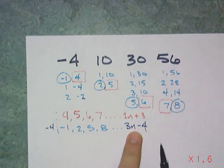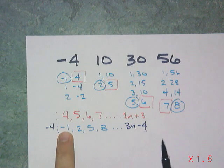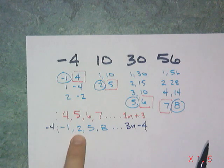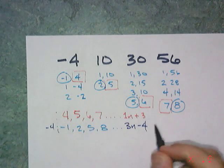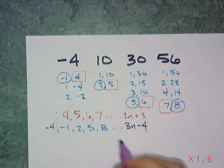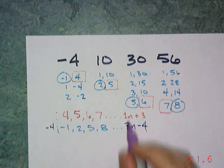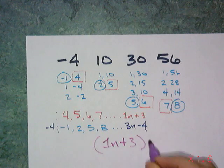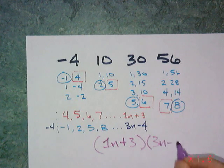So that's 3n minus 4 on that one. And I can check it. If I put a 1 in there, I want a negative 1. So if I put a 1, that's 3 minus 4. If I put a 2, I want it to be 2. So you can tell I'm at school. There you go. And there is my pattern of (1n plus 3) times (3n minus 4).